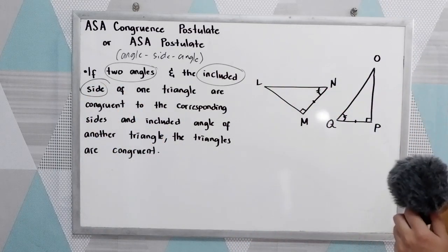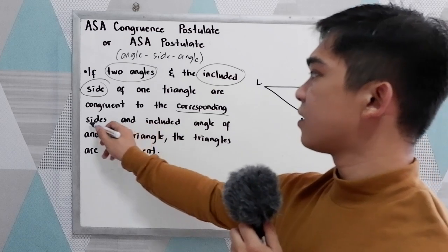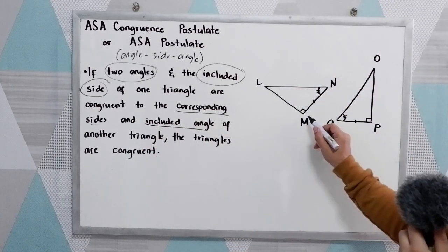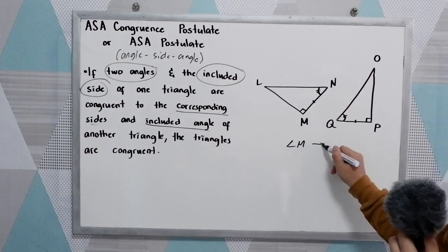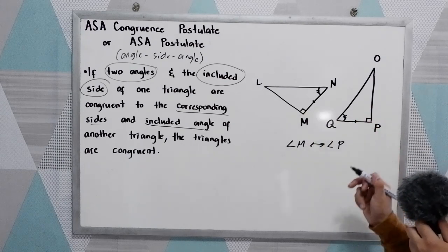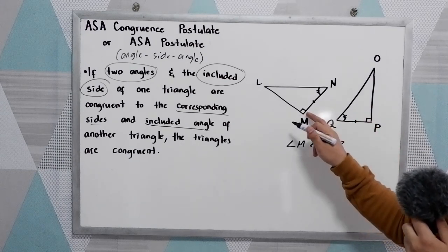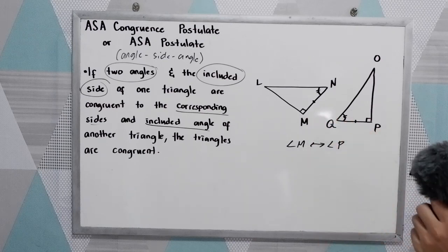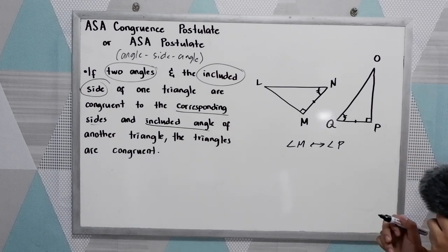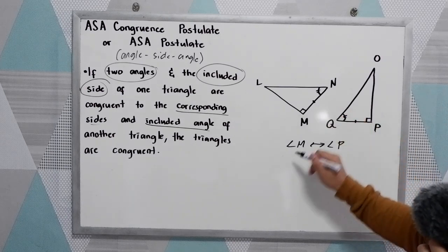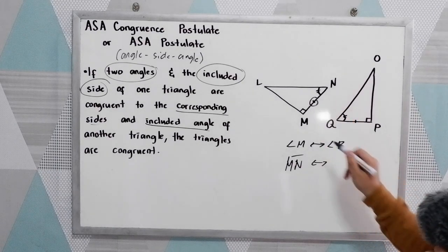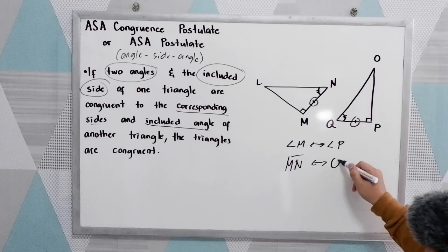Let us find first the corresponding angles and included side. We know that angle M corresponds to angle P. Why? Because they have the same measurement, which is 90 degrees. We have the perpendicular line here. And we have a marking showing that MN corresponds to QP.